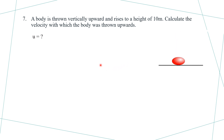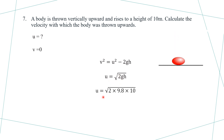Using v squared equals u squared minus 2gh (negative because motion is against gravity), with v equals 0, we get u squared equals 2gh. Therefore u equals under root of 2 into 9.8 into 10, which equals under root of 196, giving u equals 14 meters per second. So the initial velocity of the body thrown vertically is approximately 14 meters per second.